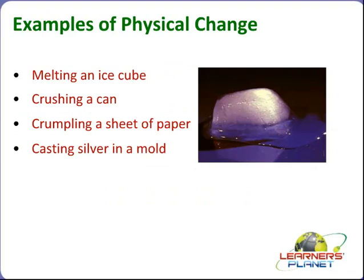The first example of physical change is melting of ice, which we just discussed. Another example is crushing a can. You must have used cans of beverages or water — you drink and then crush it. Does this crushing change the composition of the can? If I talk of bisleri bottles, they are made of plastic. After crushing, does its composition change? No. So it is a physical change.